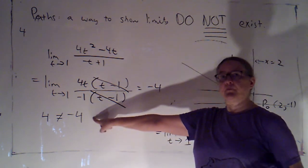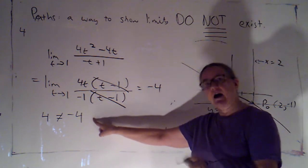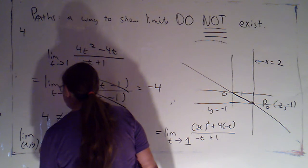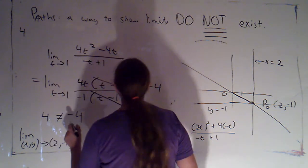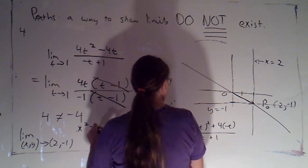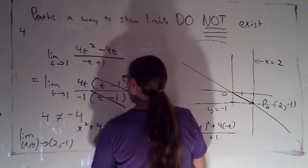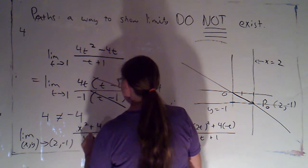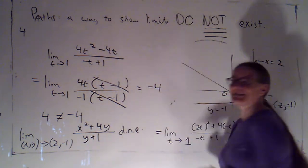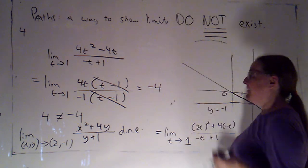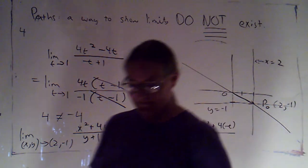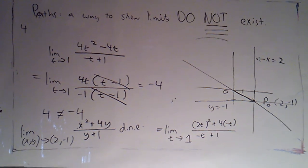Now I can observe that 4 is not the same number as -4. Path 1 gave 4, path 3 gave -4. I can therefore conclude that the limit as (x,y) approaches (2,-1) of (x² + 4y) / (y + 1) does not exist. Get two different results, point out that they were different, and then you can conclude that the overall limit does not exist.